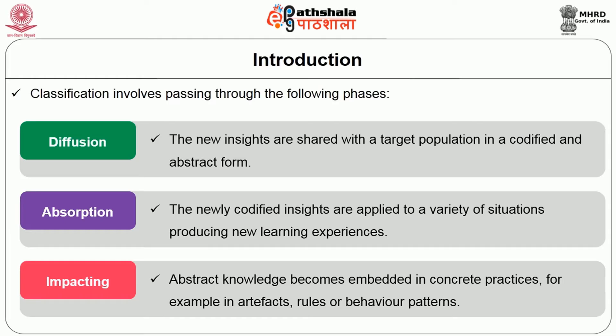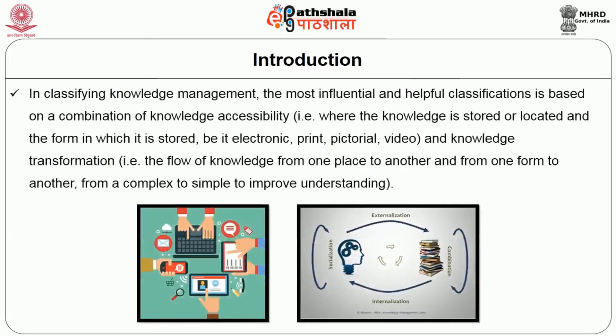In classifying knowledge management, the most influential classification is based on a combination of knowledge accessibility — that is, where the knowledge is stored or located and the form in which it is stored, whether electronic, print, pictorial, or video — and knowledge transformation, meaning the flow of knowledge from one place to another and from one form to another, from complex to simple, to improve understanding.